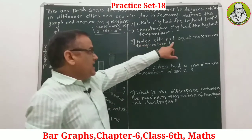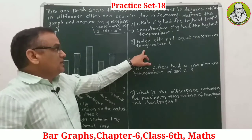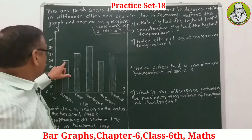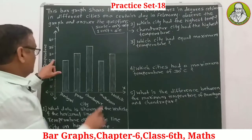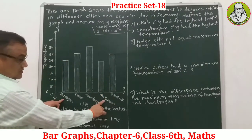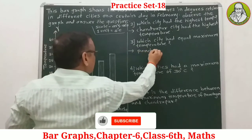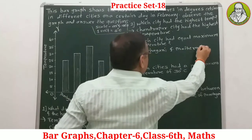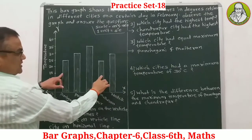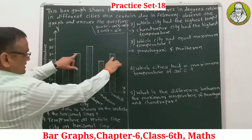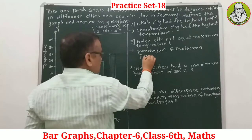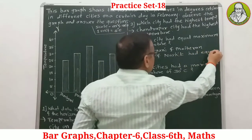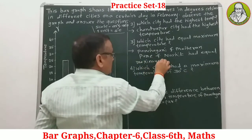Question 3: Which cities had equal maximum temperature? Pune and Nasik had equal maximum temperature — both cities show the same temperature reading of 30 degrees on the bar graph.